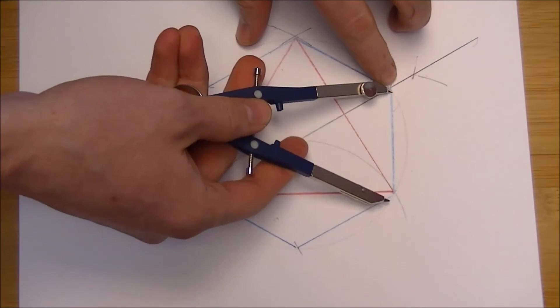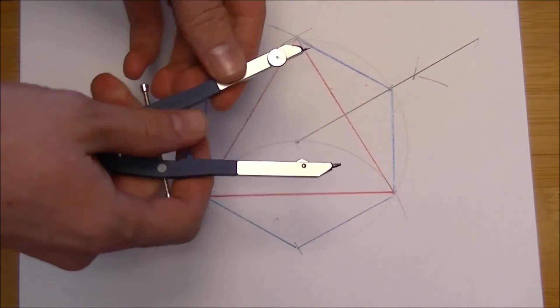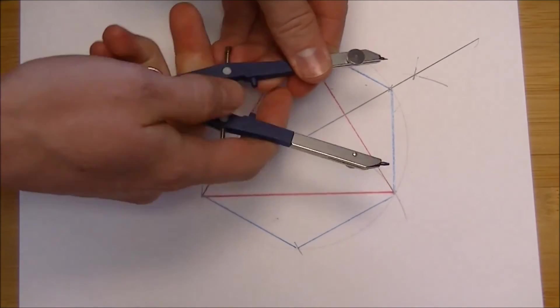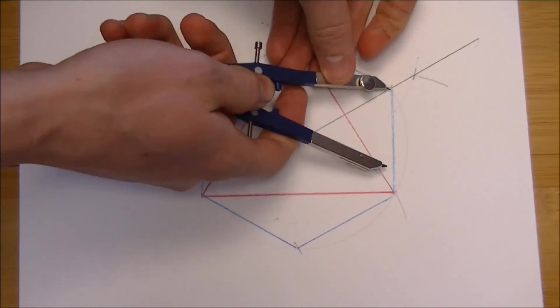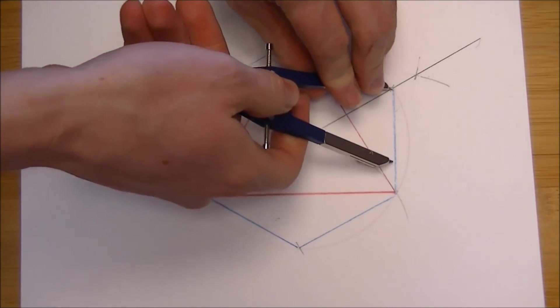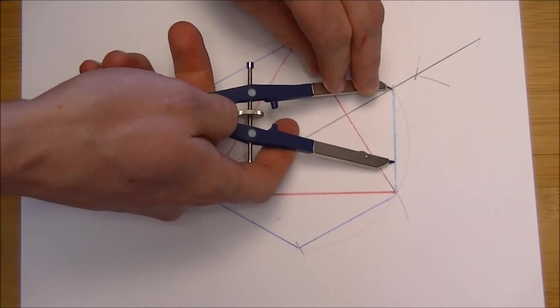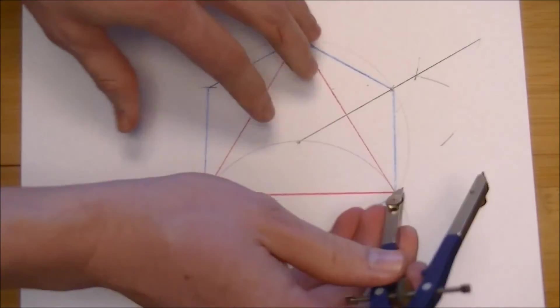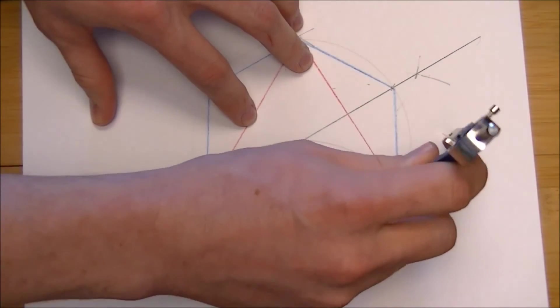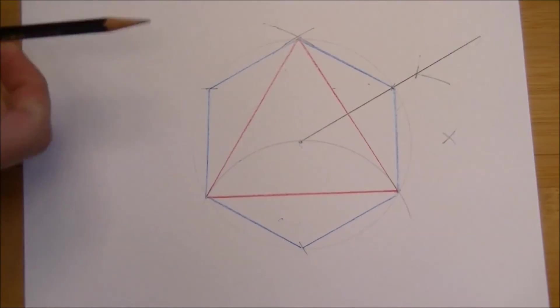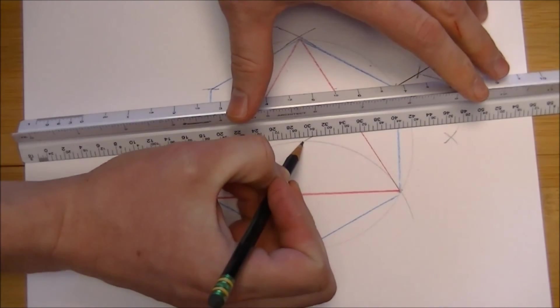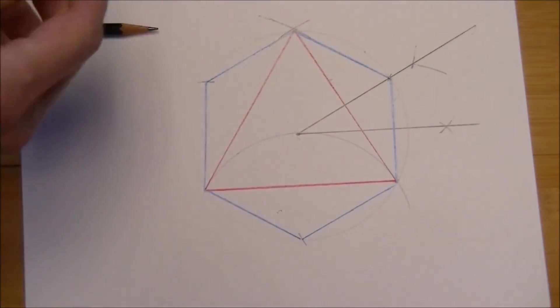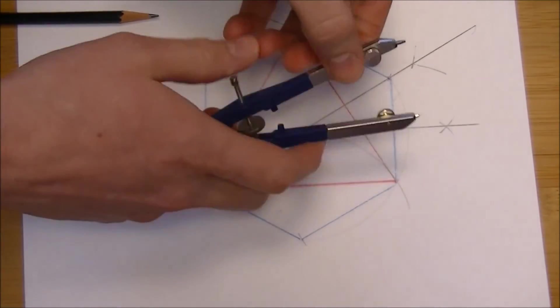I'm going to bisect this line right here, from that hexagon. And to do that, all you need to do is be more than halfway. That way, your compass needs to be spread out to more than half of the length of that line segment. Go from both sides, draw it from the center of the circle, out. And that will give you your bisected line.